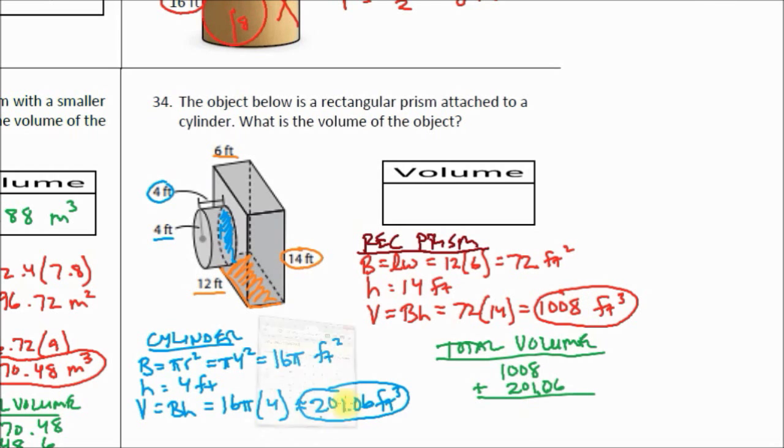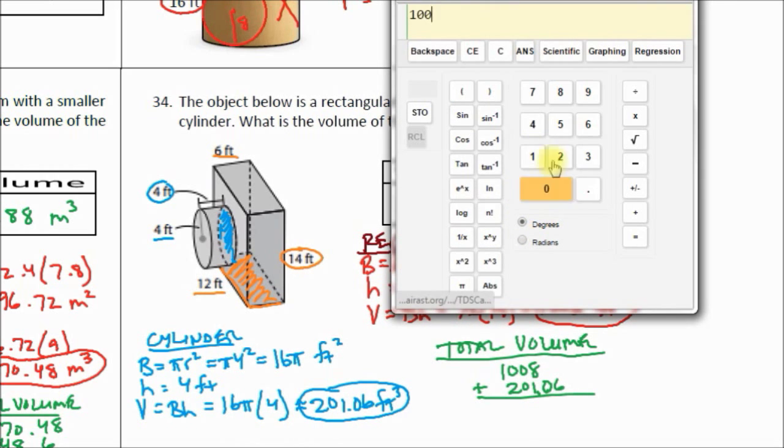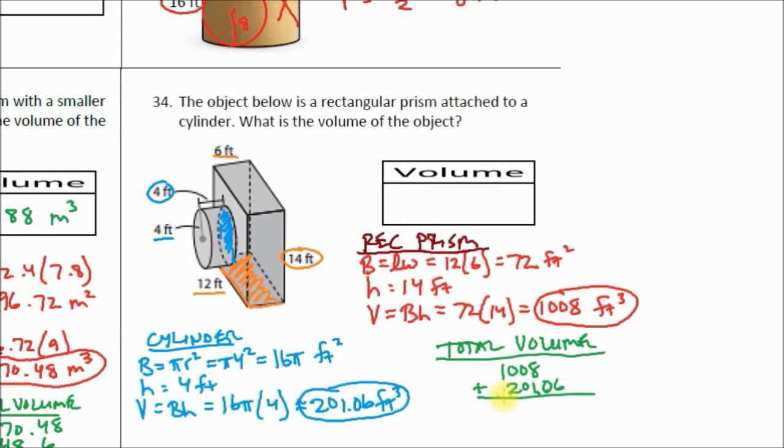And now we can do 1008 plus 201.06 equals 1209.06, there we go. So our volume is 1209.06 feet cubed, and that's the last question on our test review. If you can do all these problems, you are well prepared for the unit 10 volume test.